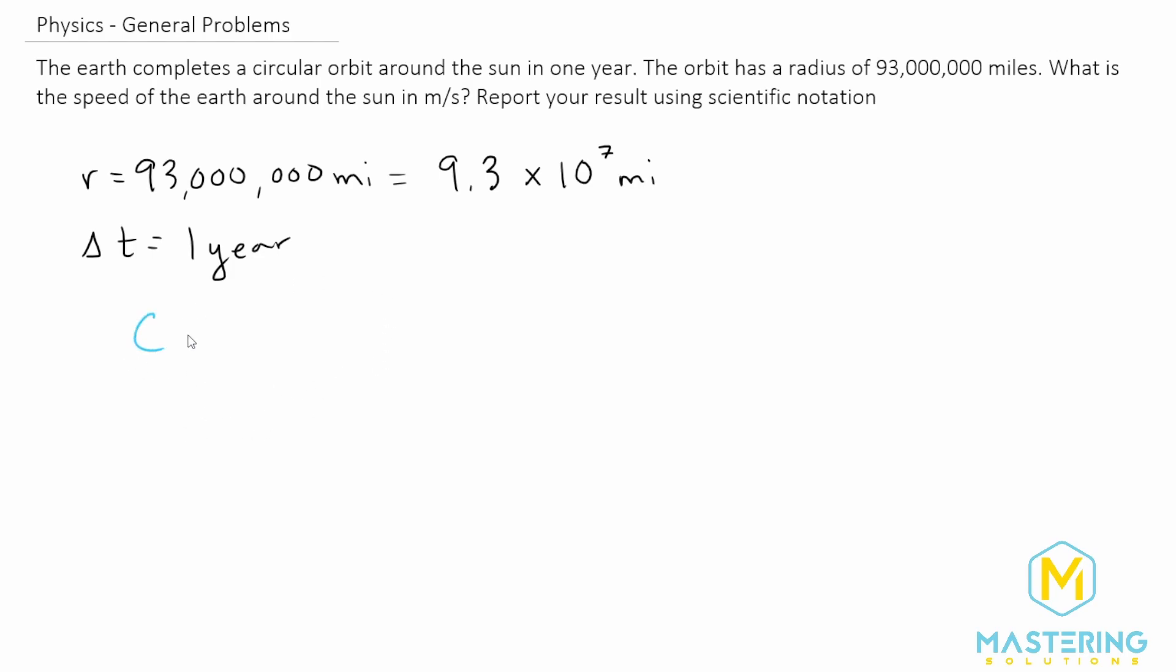We know that the formula for a circumference of a circle is equal to 2 pi times the radius. We'll use that to get the circumference of the path of the earth around the sun, and then convert into meters per second. So we have 2 pi times the radius, which we said was 9.3 times 10 to the seven miles.